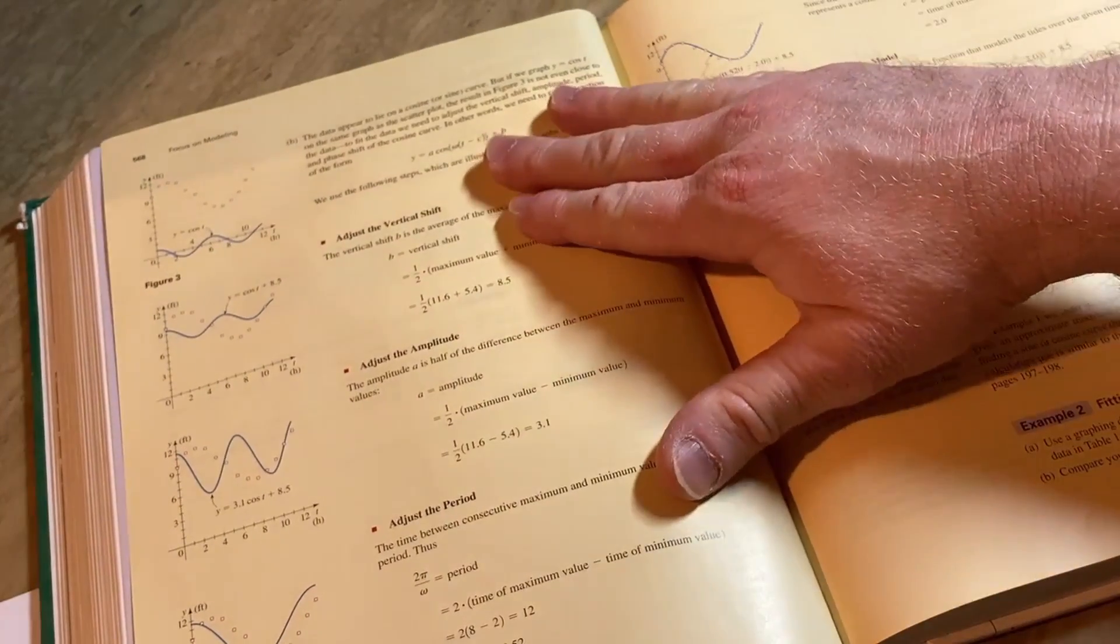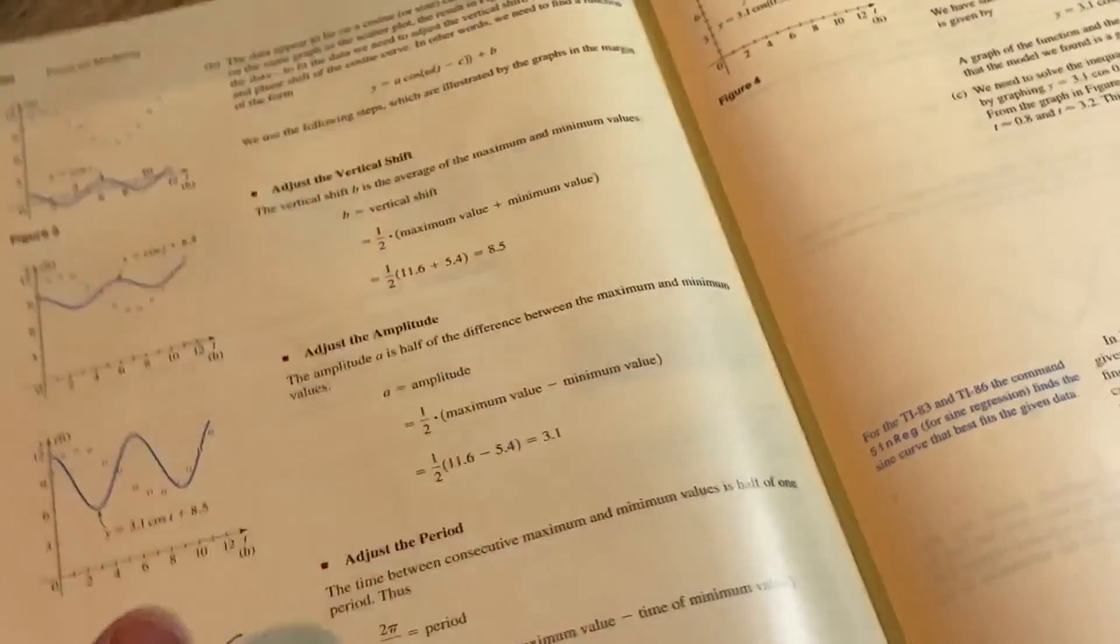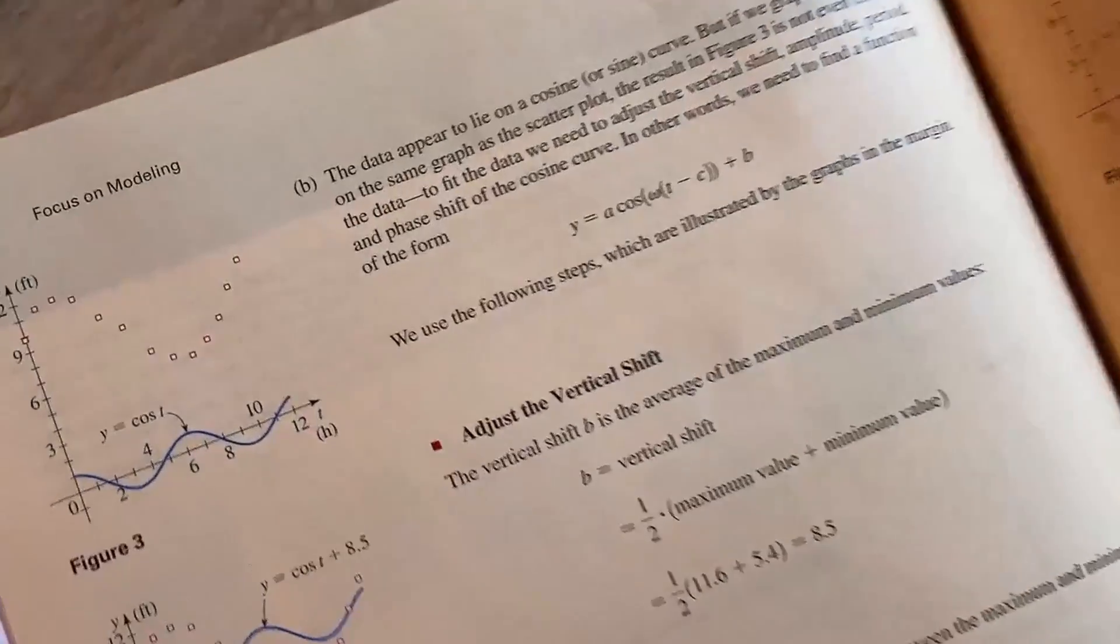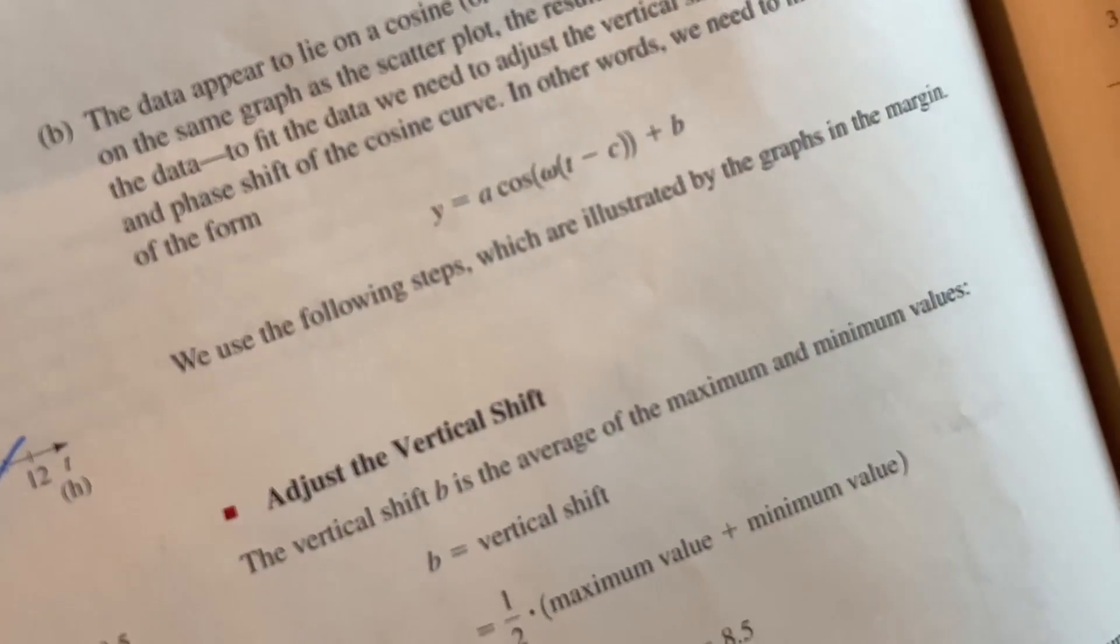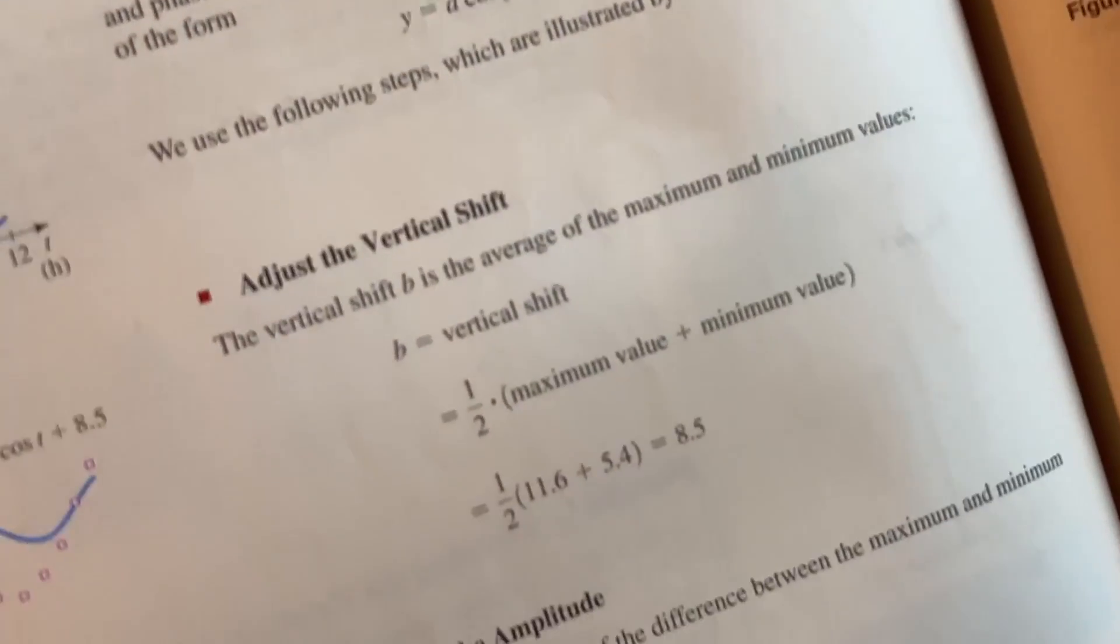So on the next page, they give you a step-by-step process for creating a mathematical model based on that data. And it just goes through all the steps. Let me zoom in here. So there's the model there. Y equals A times the cosine of omega times t minus c plus b. And it goes through, shows you how to find everything step by step.